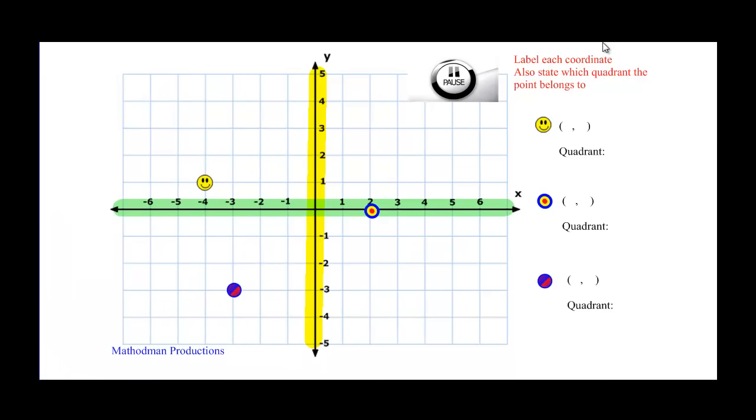For now, try out three questions below. I want you to label each coordinate. There's three. And also state which quadrant each point belongs in. Just pause the video and when you are done, your answers will appear right in front of you.